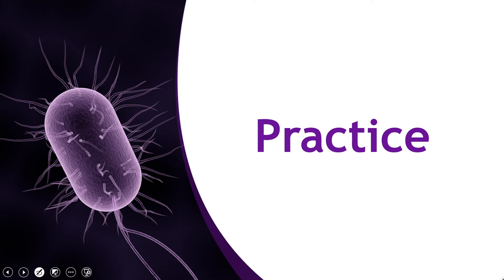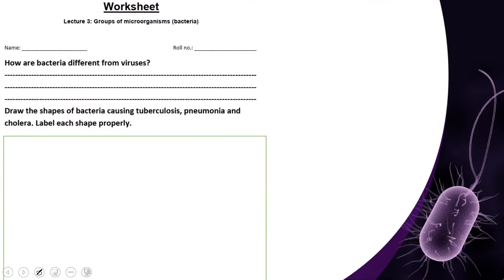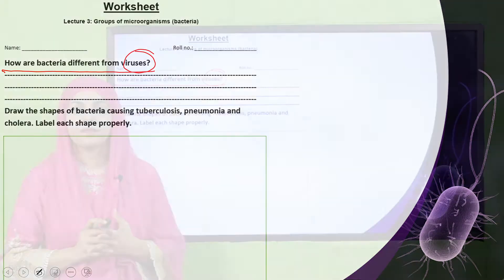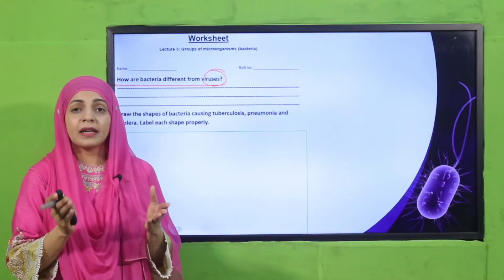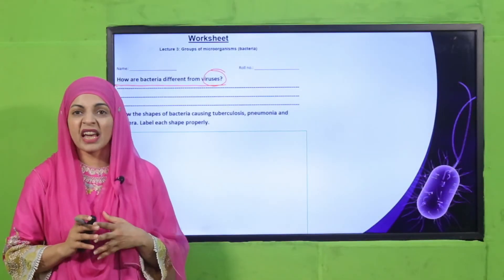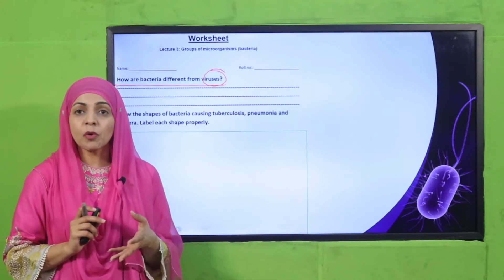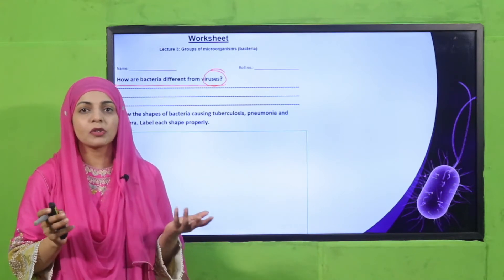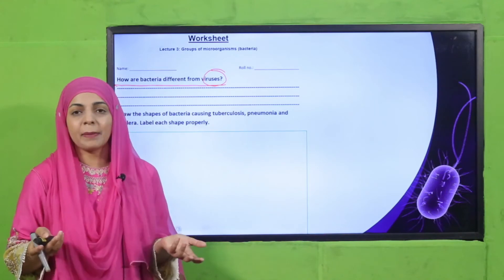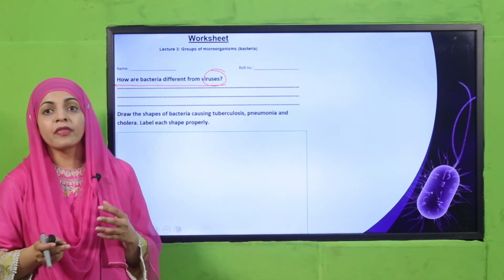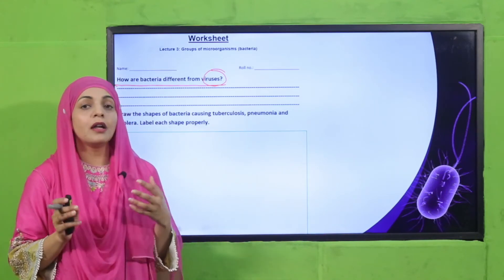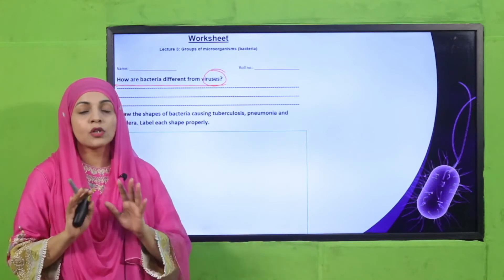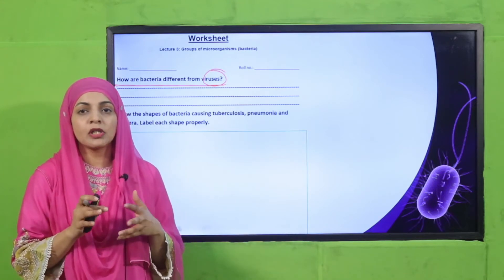Now let's move forward towards practice. How are bacteria different from viruses? Bacteria are not plants, not animals — they are cosmopolitan in nature, found almost everywhere in any habitat. They are unicellular and are living even outside the cell; they don't need a living body to survive.